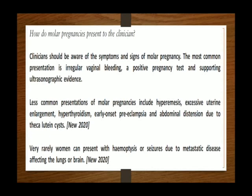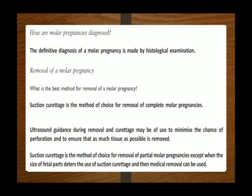The new guideline highlights that we need to be aware of less common presentations as well. Less common presentations include hyperemesis, excessive uterine enlargement, hyperthyroidism, early onset pre-eclampsia, and abdominal distension due to theca-lutein cysts. Very rarely, women can present with hemoptysis or seizures due to metastatic disease affecting the lung or brain.